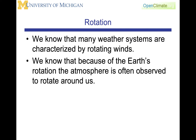We know that many weather systems are characterized by rotating winds. We also know that because of the Earth's rotation, the atmosphere is often observed to rotate around us. These rotating winds that we're so used to are really caused by something quite fundamental about our planet, namely its rotation.